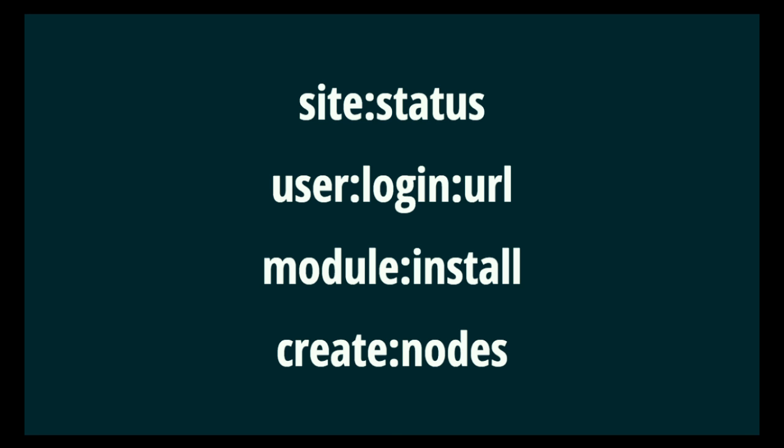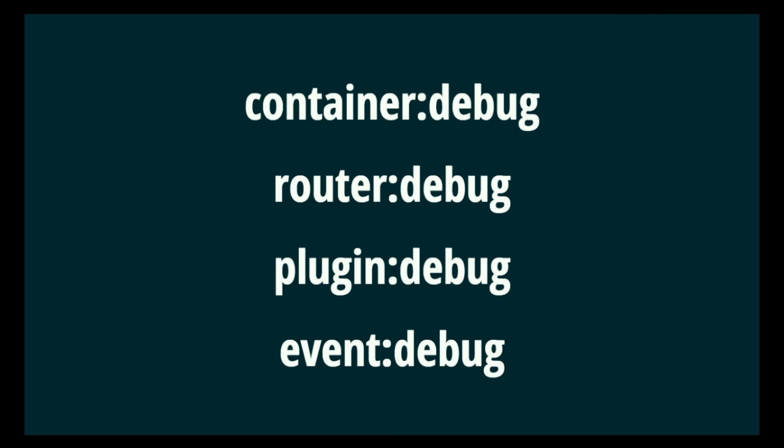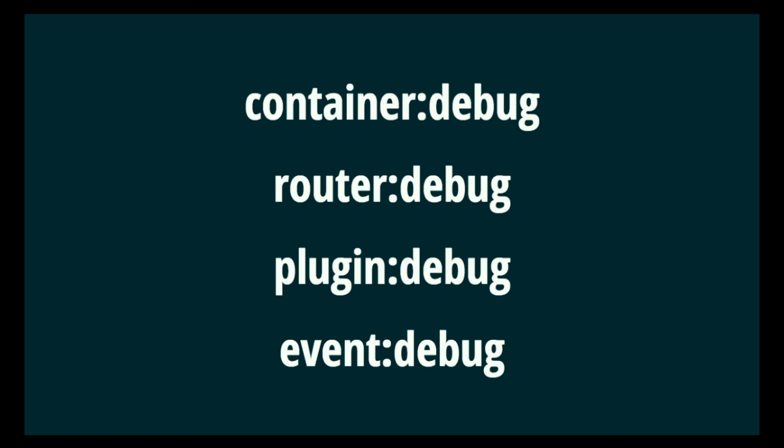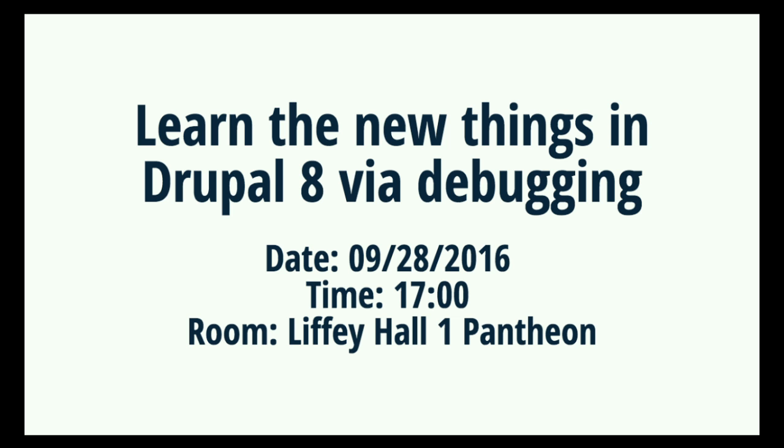For system interaction commands, we have site status — basically the status report from the UI, but without clicking four times. Use 'login-url' to get a one-time login URL from the CLI. Module install, theme install, and download commands are also available. We take advantage of core features for generating dummy data: create-node, create-term, and create-user commands so you can seed your site with fake data in your build process. For debugging, DrupalConsole lets you discover all the new subsystems in Drupal 8 — container services, routes, plugins, events, configuration, and state. Make sure you attend the debugging session tomorrow at 5 p.m.